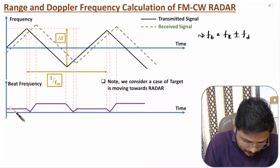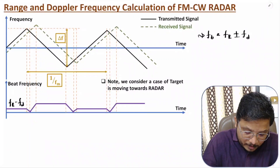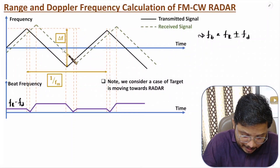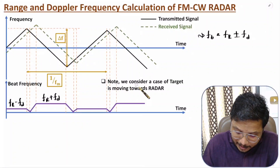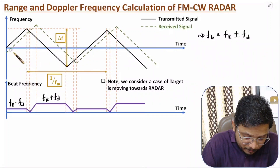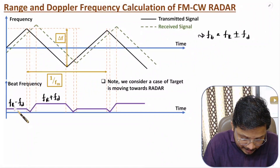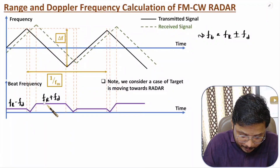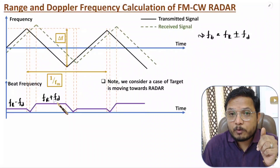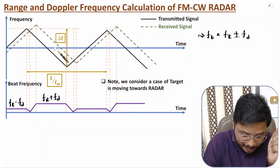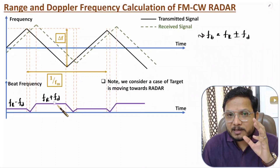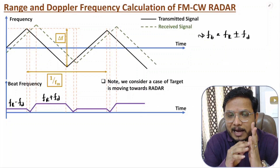When the triangular wave is rising, the difference between transmitted and received frequencies is lower — this is range frequency minus Doppler frequency. When the triangular wave is falling, the beat frequency is higher — that is FR plus FD. Here we are considering that the target is moving towards the radar. During the rising of transmitted frequency, beat frequency is FR minus FD, and during falling, it is FR plus FD. If the target is moving away, during rising beat frequency is FR plus FD, and during falling it is FR minus FD. Beat frequency is the difference in frequencies between the transmitted and received echo signal.